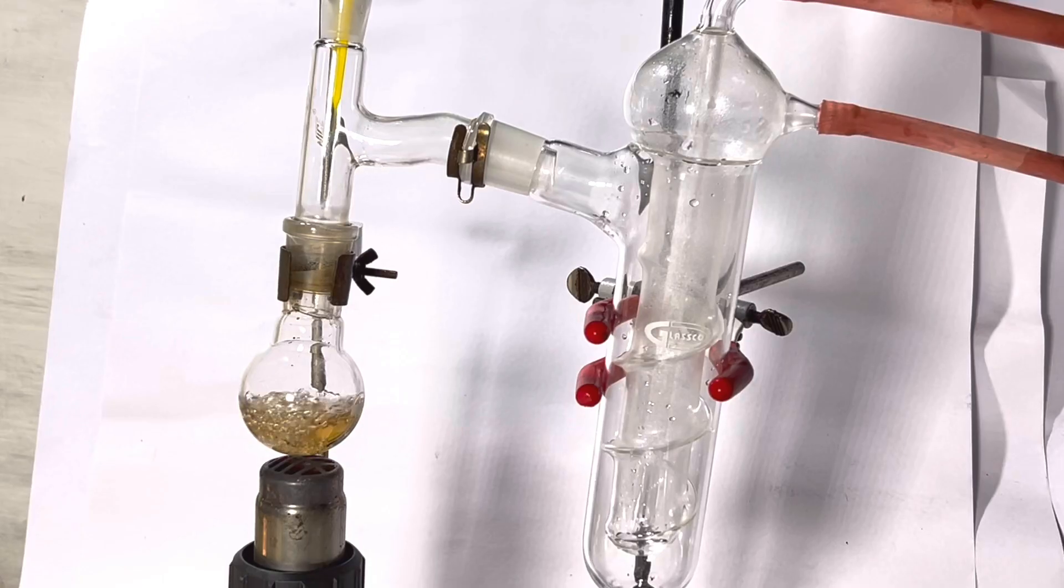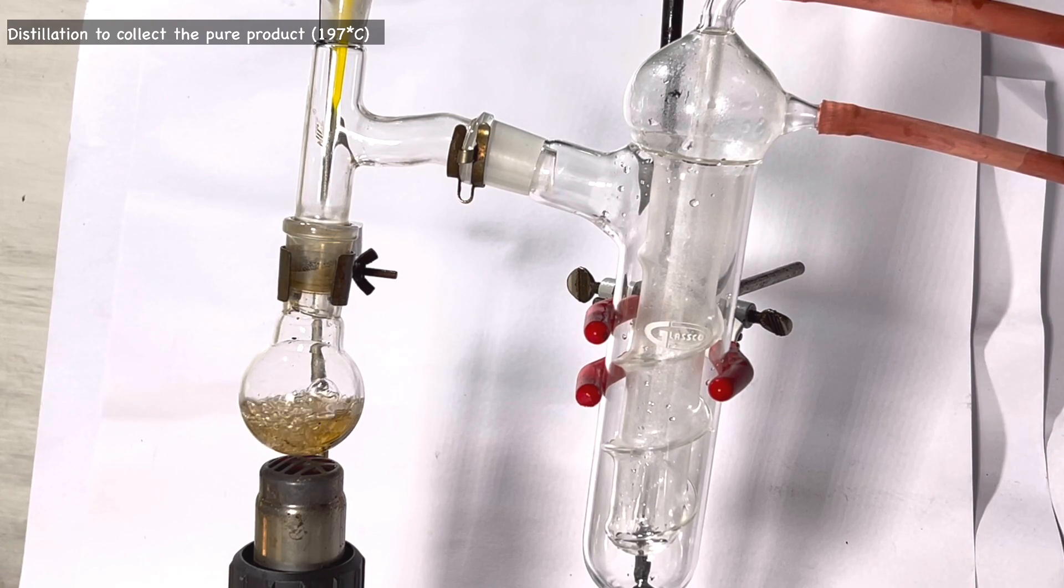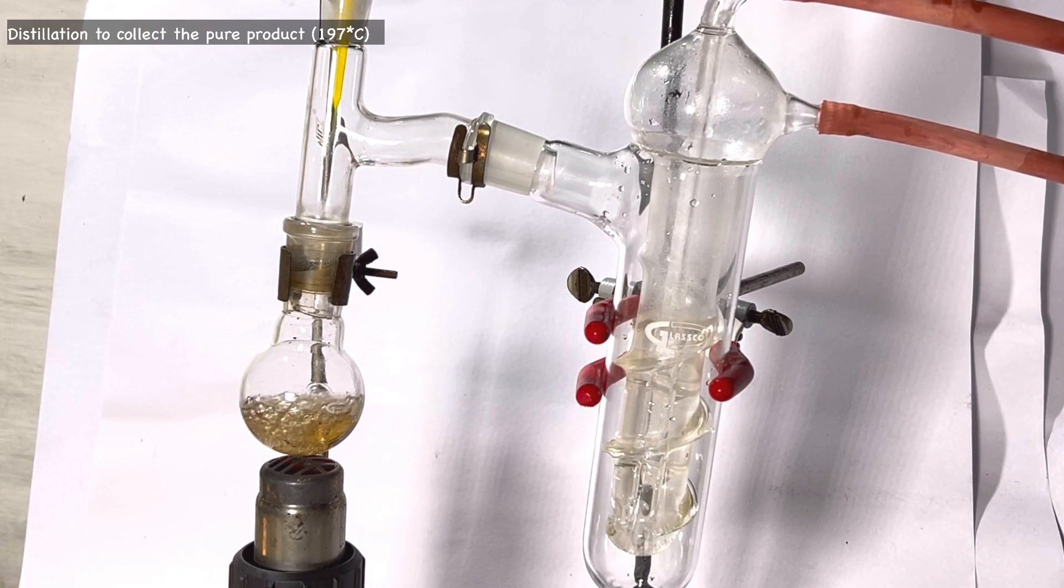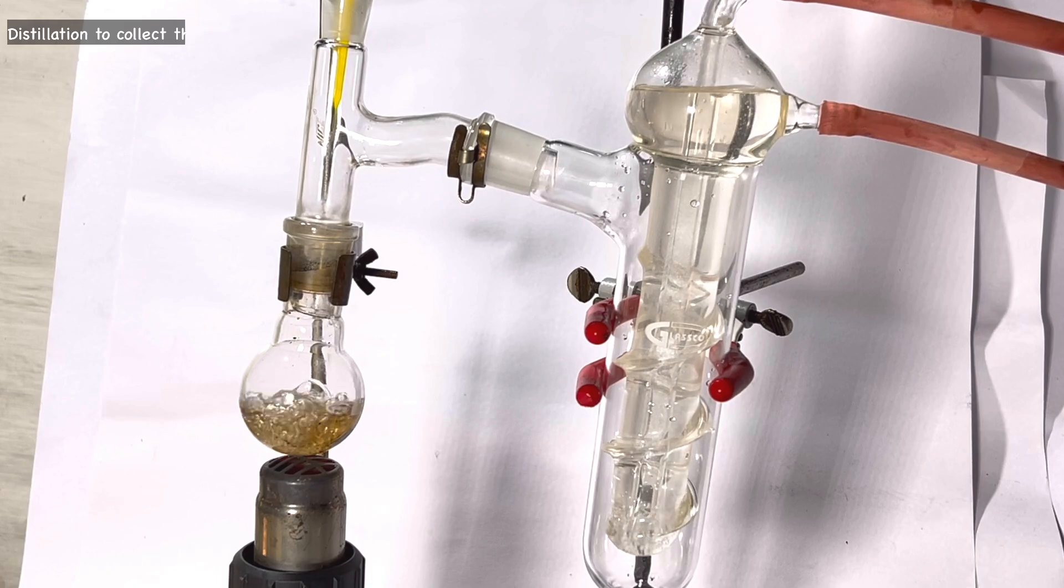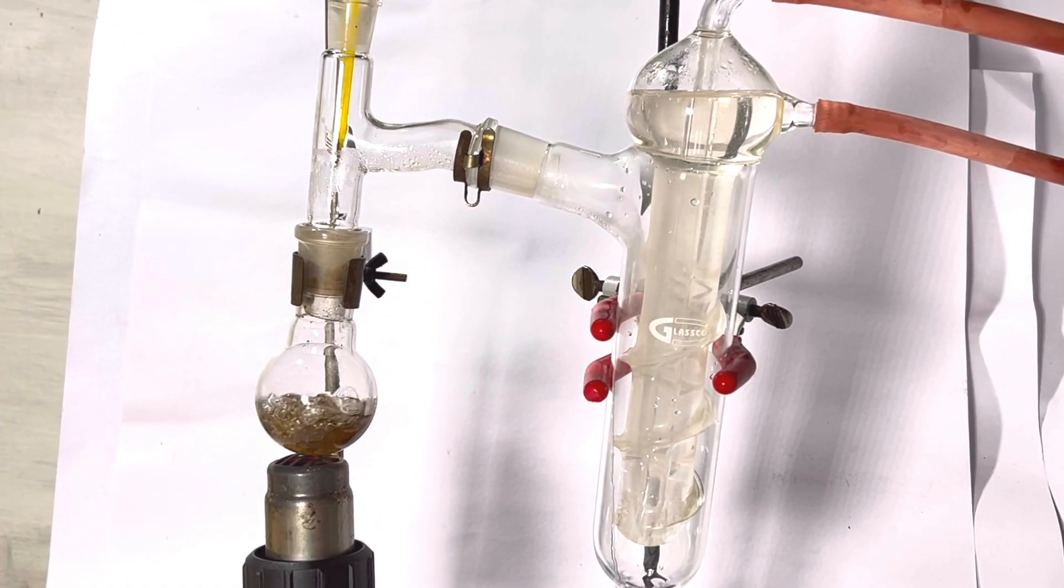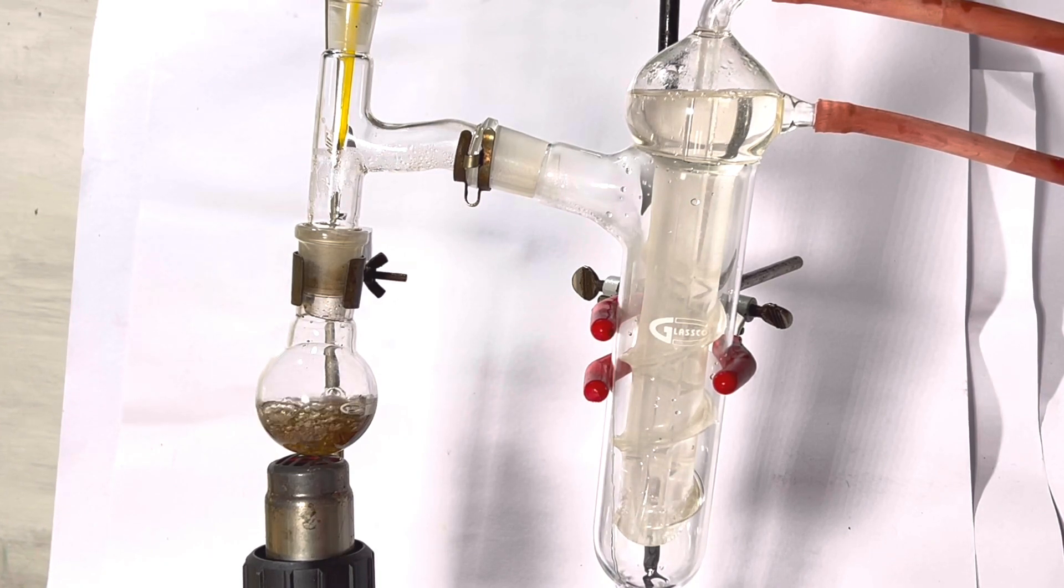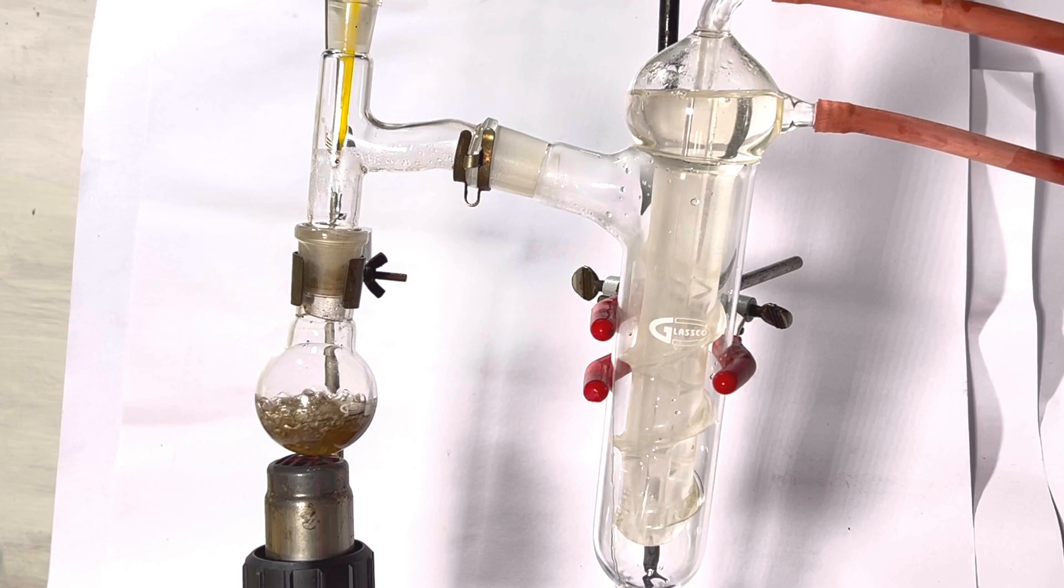Then the organic layer was set up for distillation. A short path distillation is the perfect choice here as the boiling point of 1,4-dibromobutane is 197 degrees C. Since I do not have a short path distillation setup, I am going with the regular simple distillation using the Friedrichs condenser.